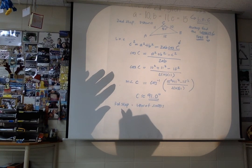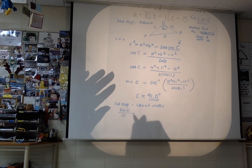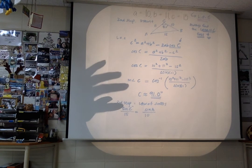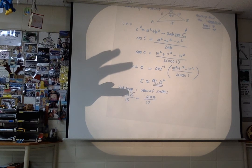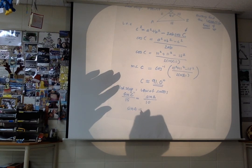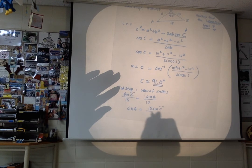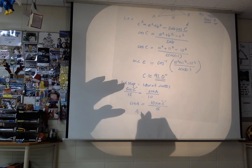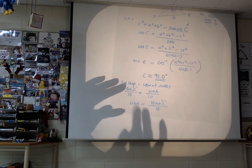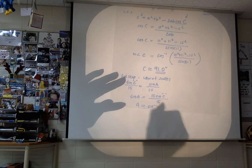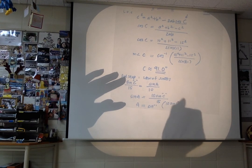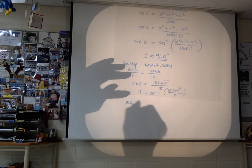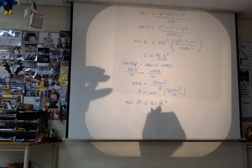We could do sine of angle C over 15 equals sine of angle A over 10. I put C in quotes because it's an approximate value — I don't want to plug in the rounded number. So rewrite it: sine of A equals 10 times sine of C over 15. Now angle A is approximately equal to sine inverse of that value. So the measure of angle A is approximately 41.8 degrees.